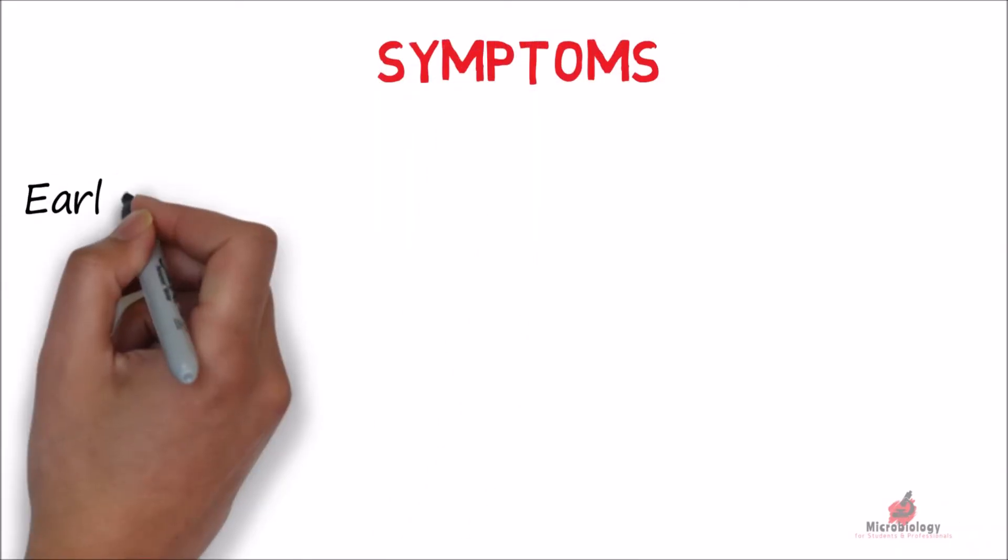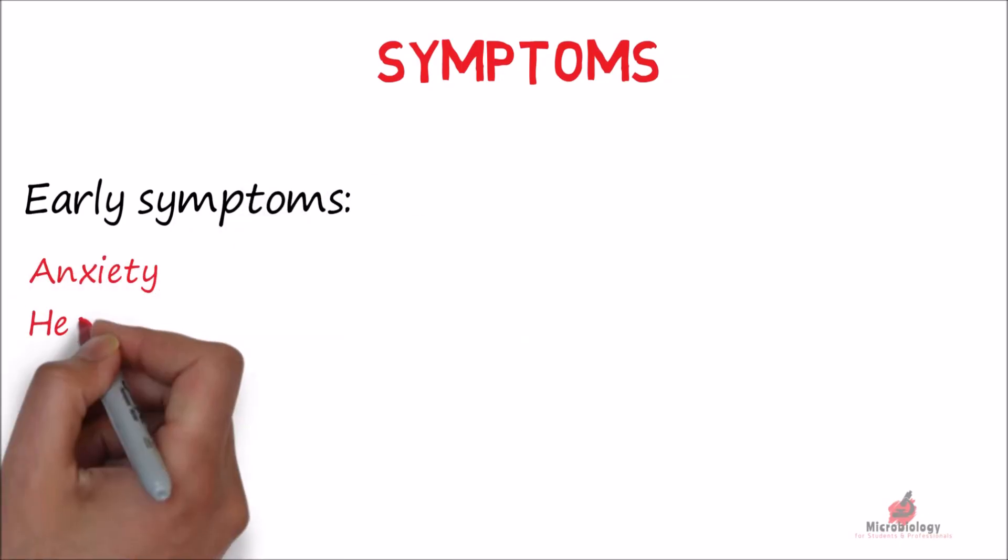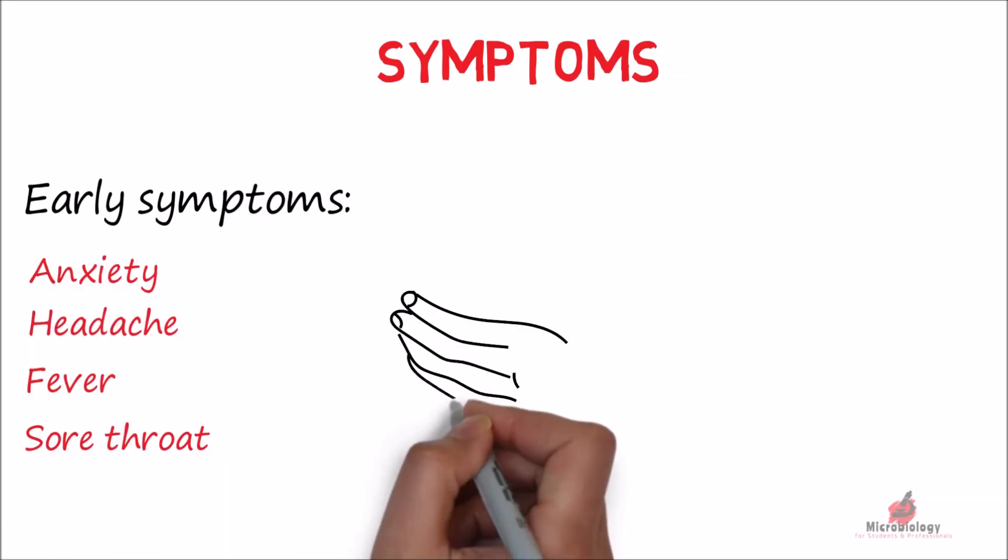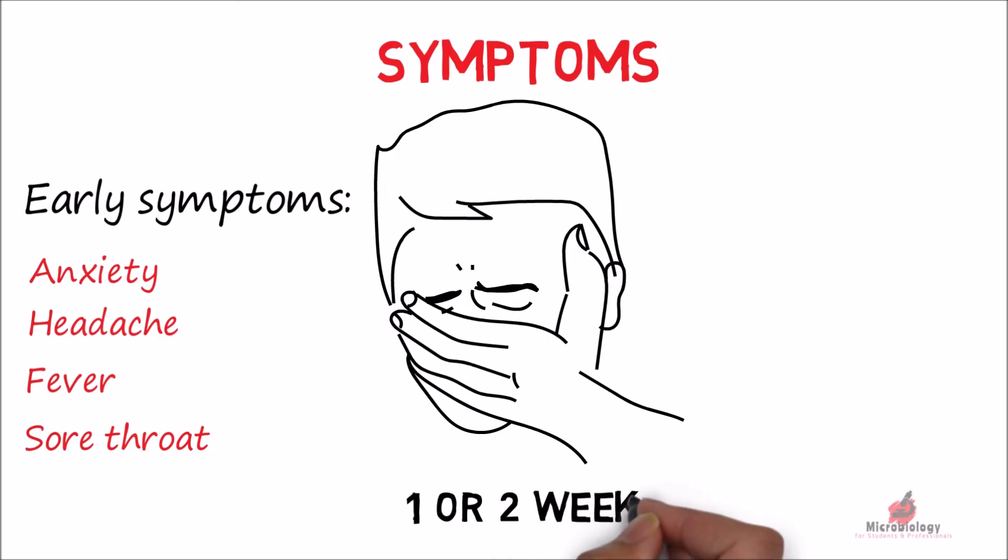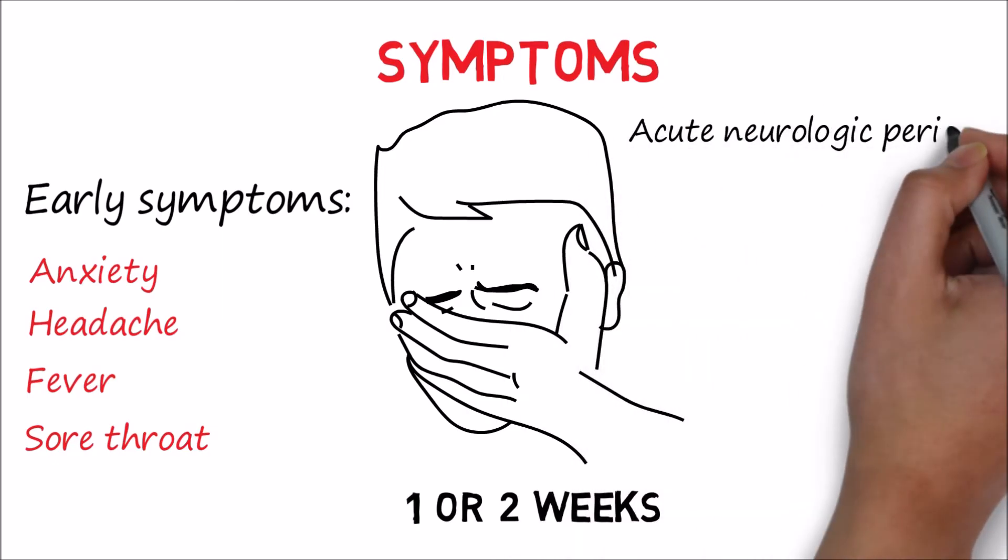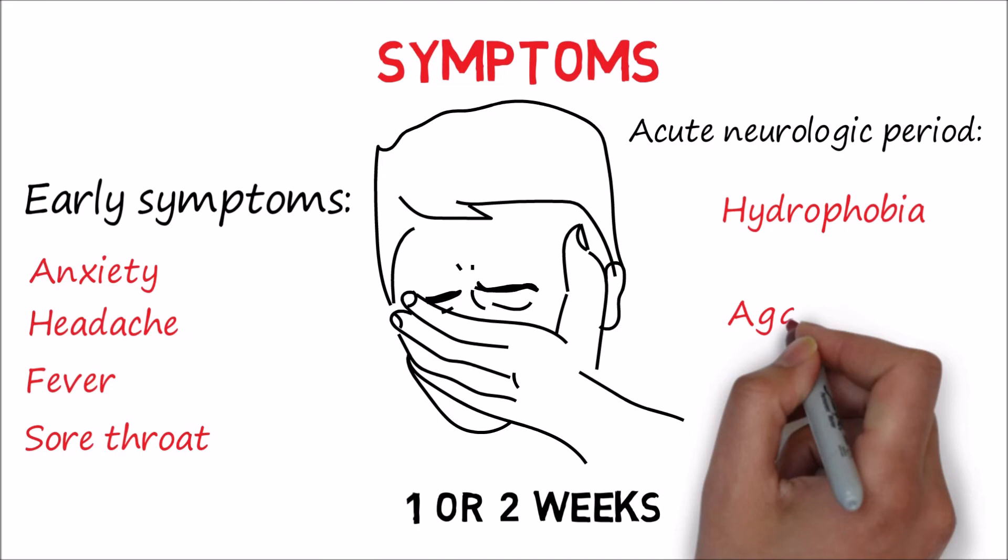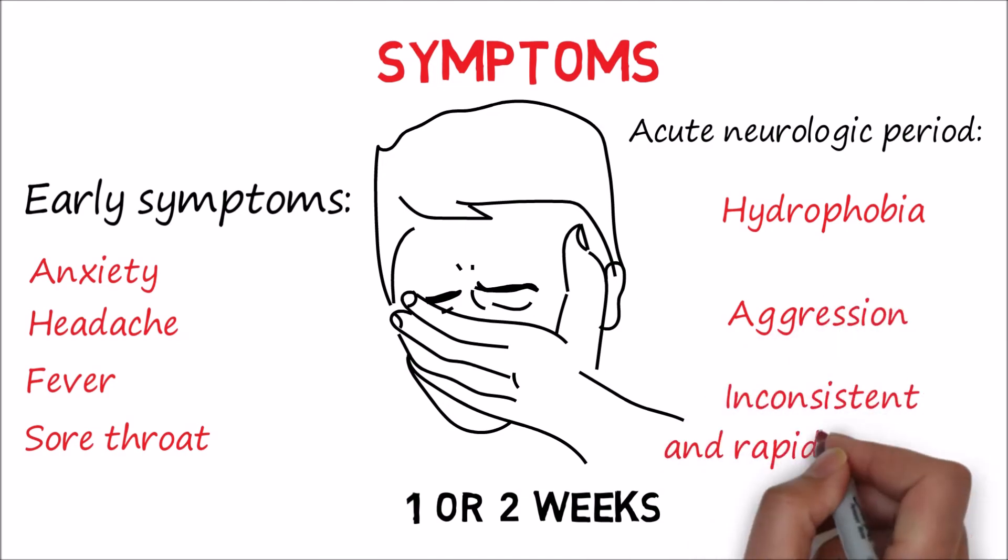The early symptoms may include anxiety, headache, fever, and sore throat. These symptoms will last for one or two weeks. In the acute neurologic period, the symptoms will include hydrophobia, aggression, inconsistent and rapid breathing.